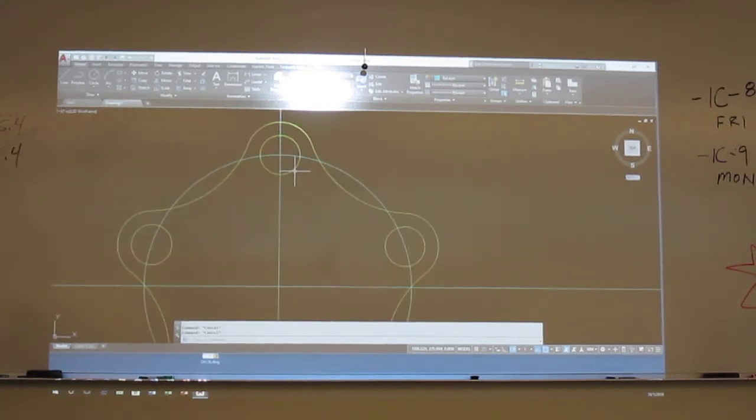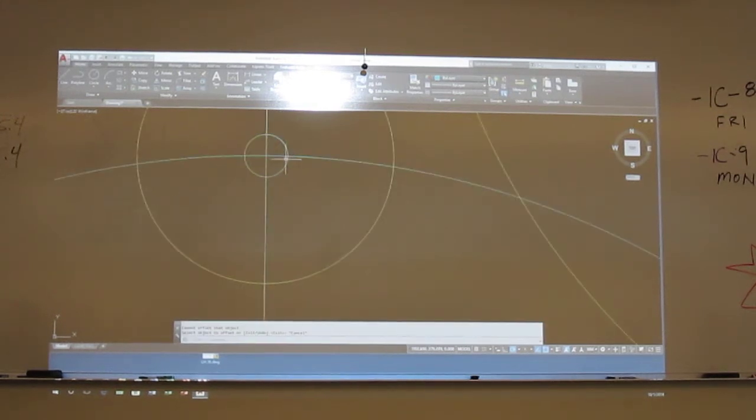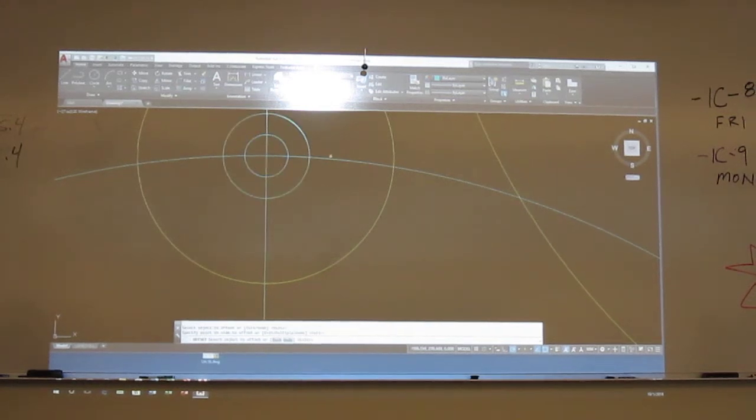Again, here's that eighth and sixteenth, so I'm going to come in here and do a circle. It's got a 1.6, do an offset of 1.6. There we go.